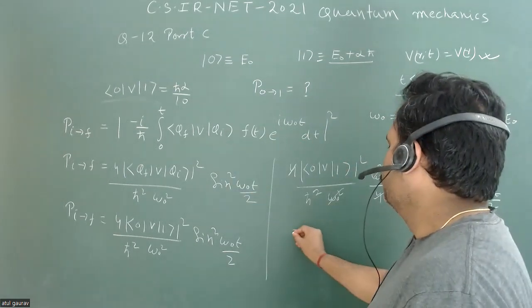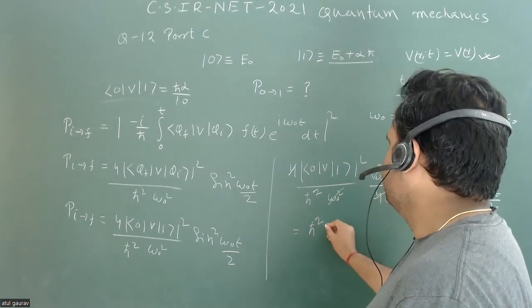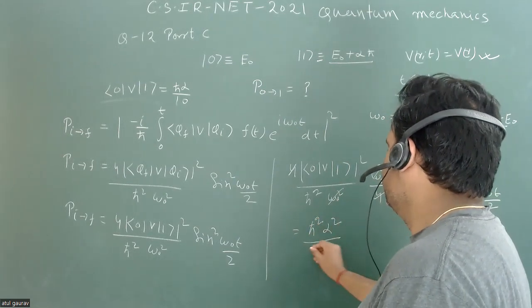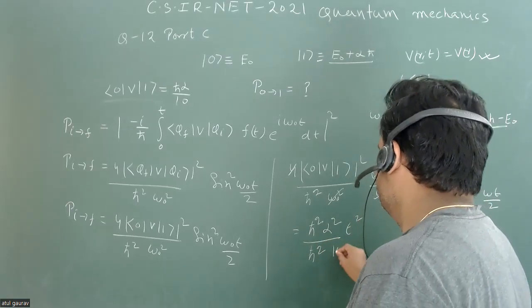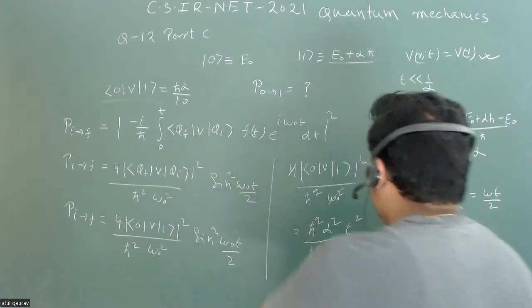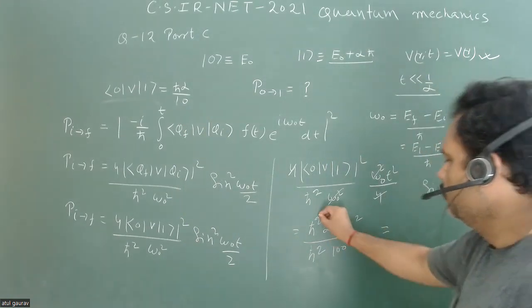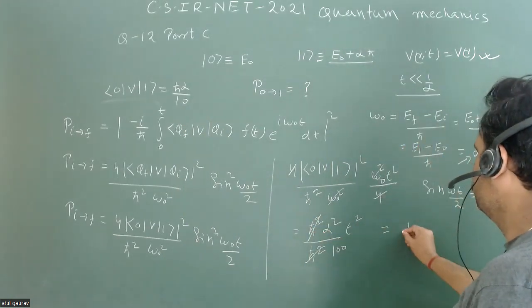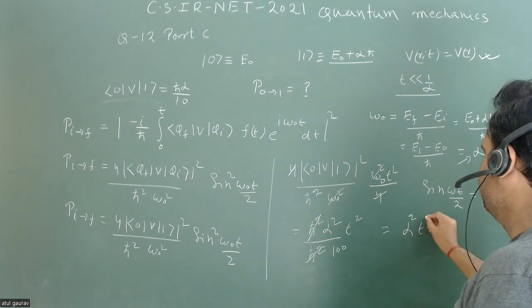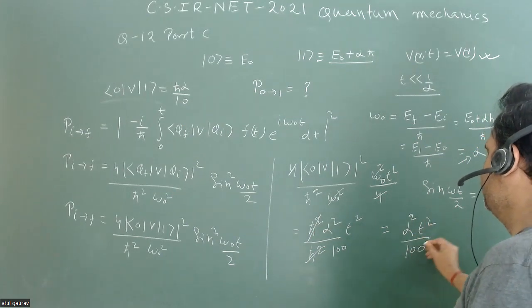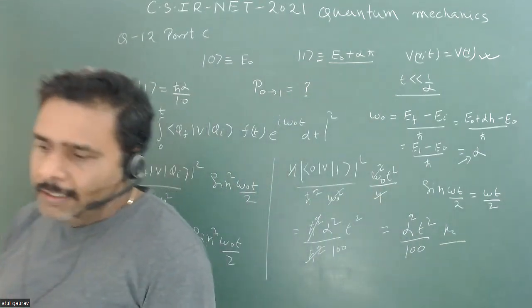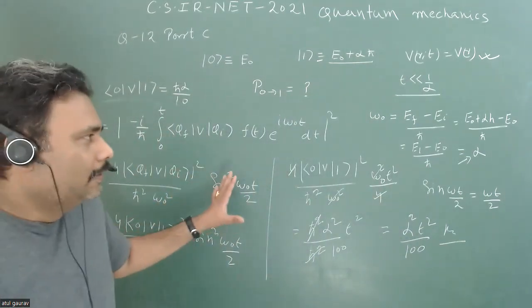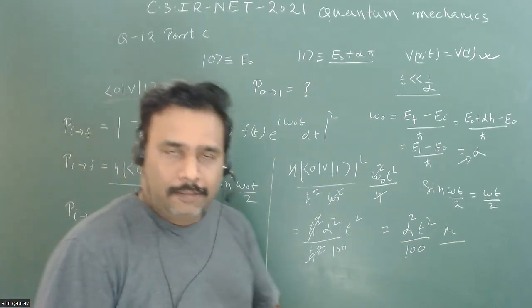We have to put only this value. When we put this value, that is (ℏ²α²)/ℏ² and the matrix element is (ℏα/10)², which gives 100 in the denominator. The ℏ² cancels, so this value is α²t²/100.